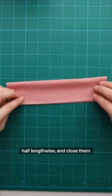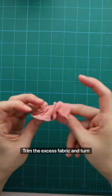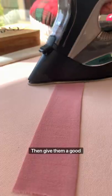Then fold both rectangles in half lengthwise and close them with a half inch seam allowance. Trim the excess fabric and turn them both right side out. Give them a good press.